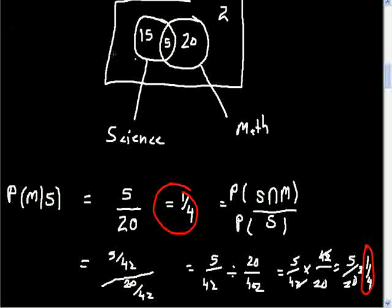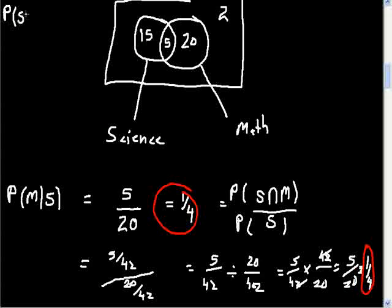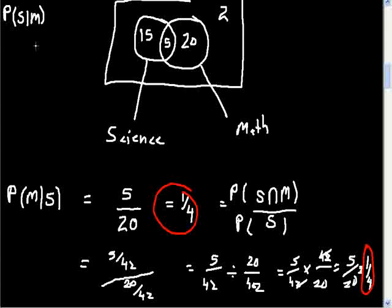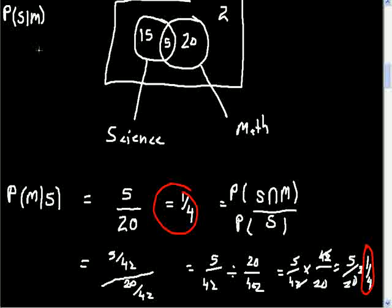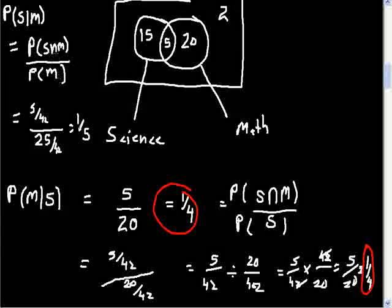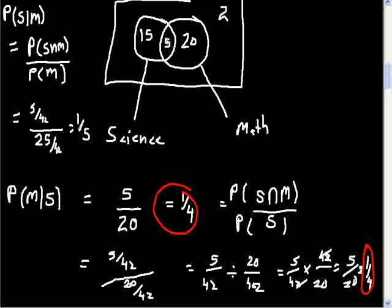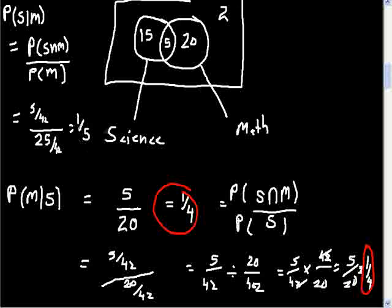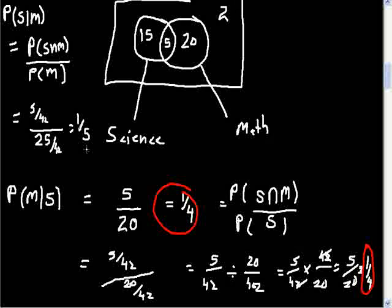Now try this: P(S|M) — the probability of S given that it's already an M. You divide P(S ∩ M) by P(M). You're putting all the maths students into one class and asking what's the probability of picking a science student. Dividing those probabilities gives the answer.